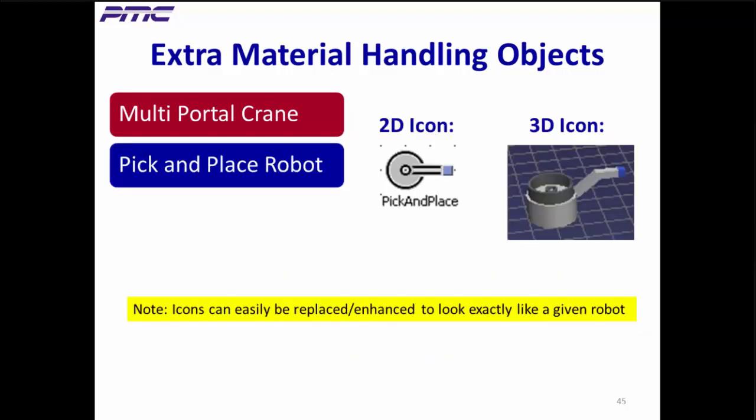The pick-and-place robot rotates to a station, picks up a part, then rotates to another station and places it there. In products that do not have this object, a simple pick-and-place movement can be modeled with a station object. This black-boxing is okay statistically, but does not provide the visualization that is becoming more important for communicating to others how your facility works.